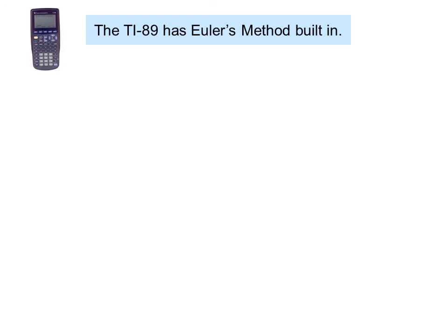The TI-89 has Euler's method built in. Example: dy/dx equals 0.001y times the quantity 100 minus y, where y sub 0 equals 10.